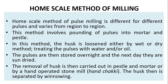Home scale method of pulse milling differs in different regions. Pounding of pulses in mortar and pestle is common. The husk is loosened either by a wet or dry method — treating the pulses with water and/or oil, storing overnight, and sun drying the next day. Husk removal is carried out in pestle and mortar or by a hand-operated stone mill known as hand chakki. The husk is then separated by winnowing.